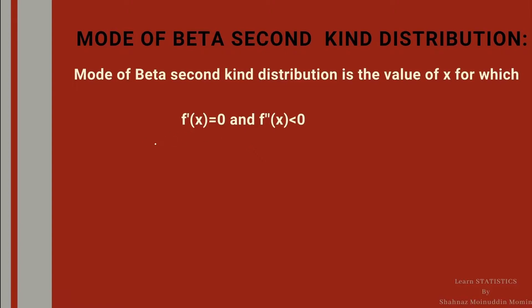Consider the PDF of beta second kind: f(x) = 1 / [Beta(m, n)] * x^(m-1) / (1 + x)^(m+n).